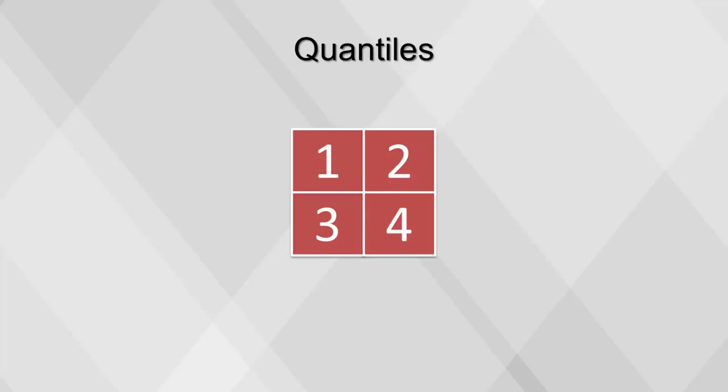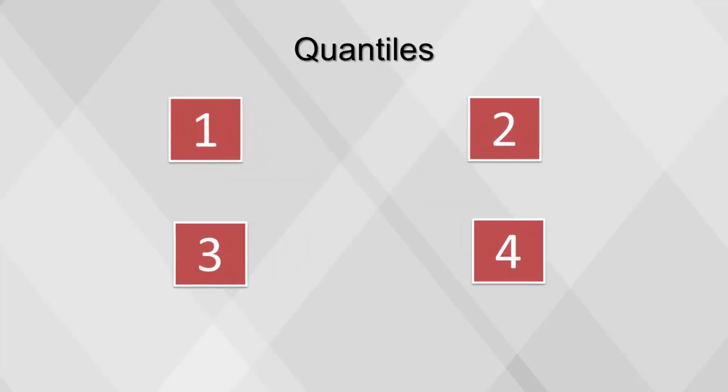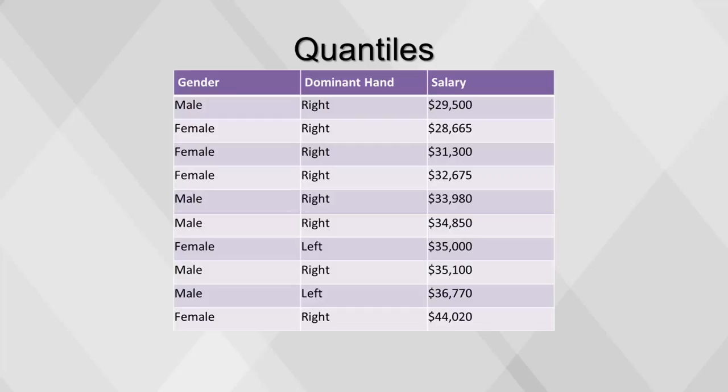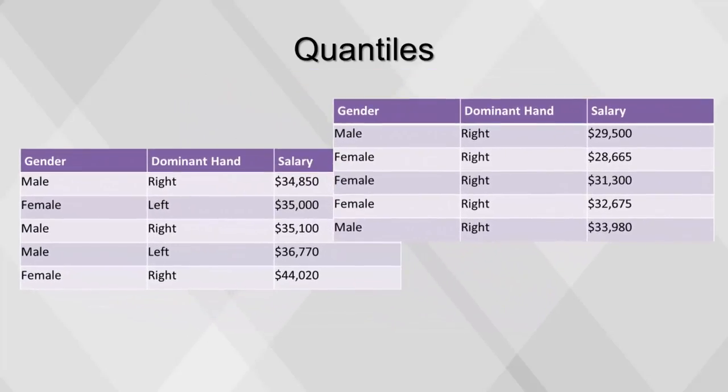A quantile is a set of values that divide a frequency distribution into equal groups, each containing the same fraction of the total population. To find quantiles, divide the distribution into groups of equal size, with each group containing about the same number of rows. The most simple of quantiles has already been calculated: the median divides the records into two groups of five.